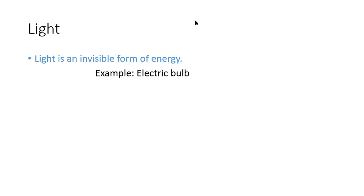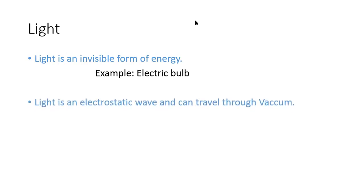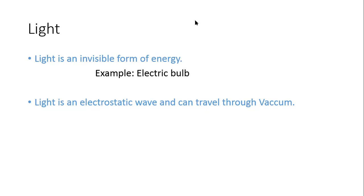Light is known as an invisible form of energy. For example, an electric bulb uses electricity and turns that electricity into heat and gives us light. Light is known as an electromagnetic wave and light can travel through vacuum — it does not need a medium to travel, like sound does.